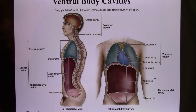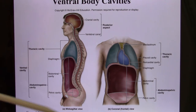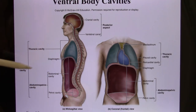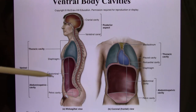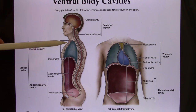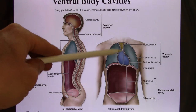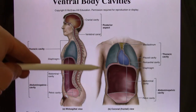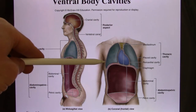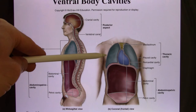Now we're in the ventral cavity. The ventral cavity can be divided into the thoracic and abdominal pelvic. The abdominal pelvic can be divided into the abdominal and the pelvic cavity. Now let's look at the thoracic. Inside the thoracic cavity you have the lungs and the heart.